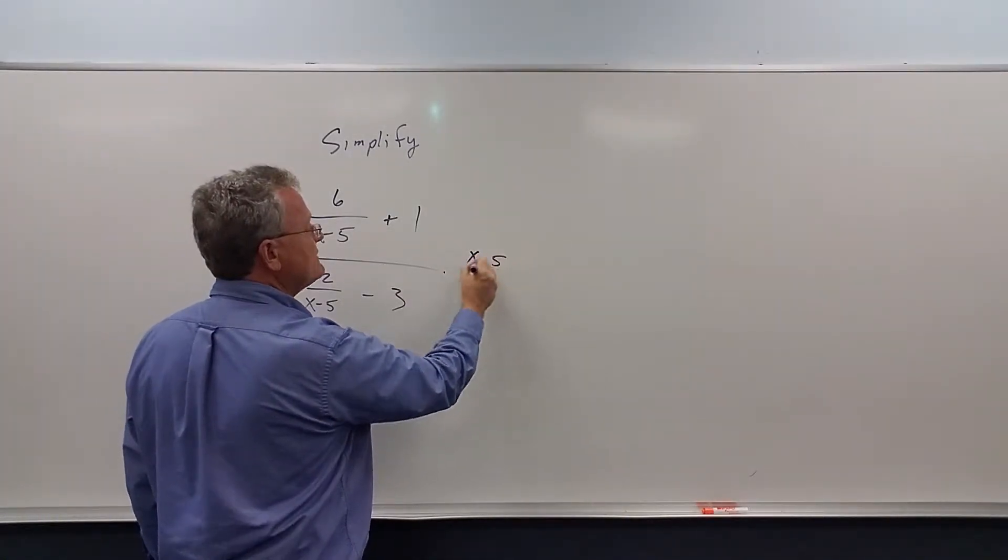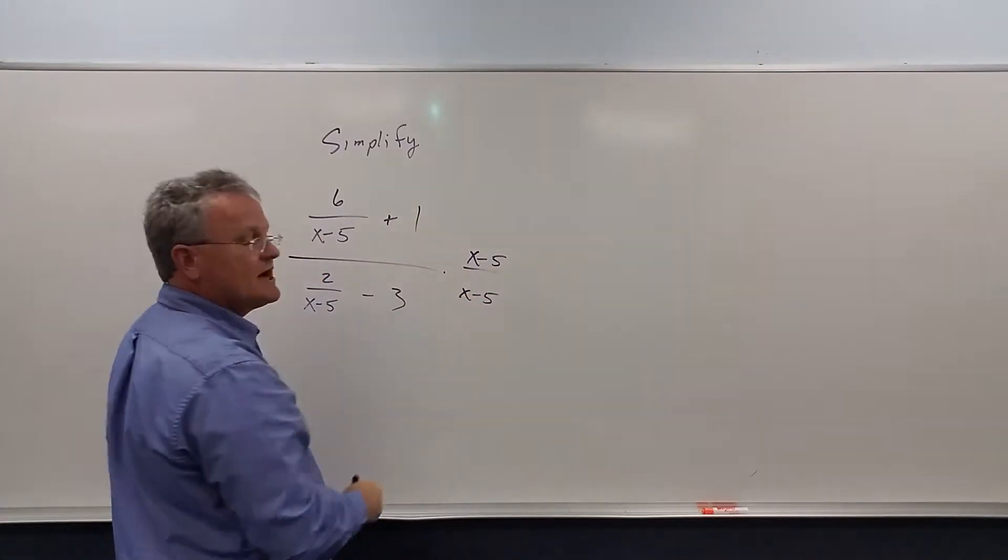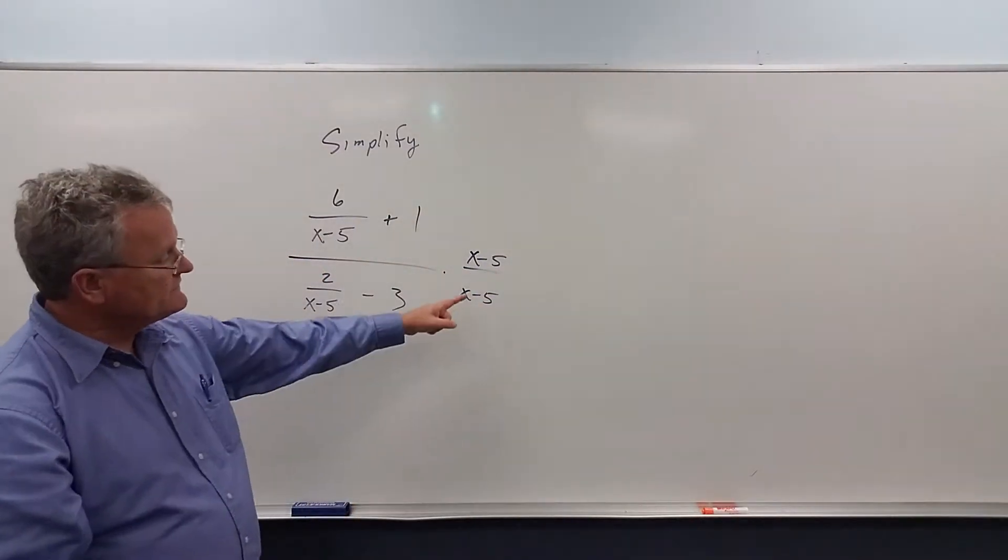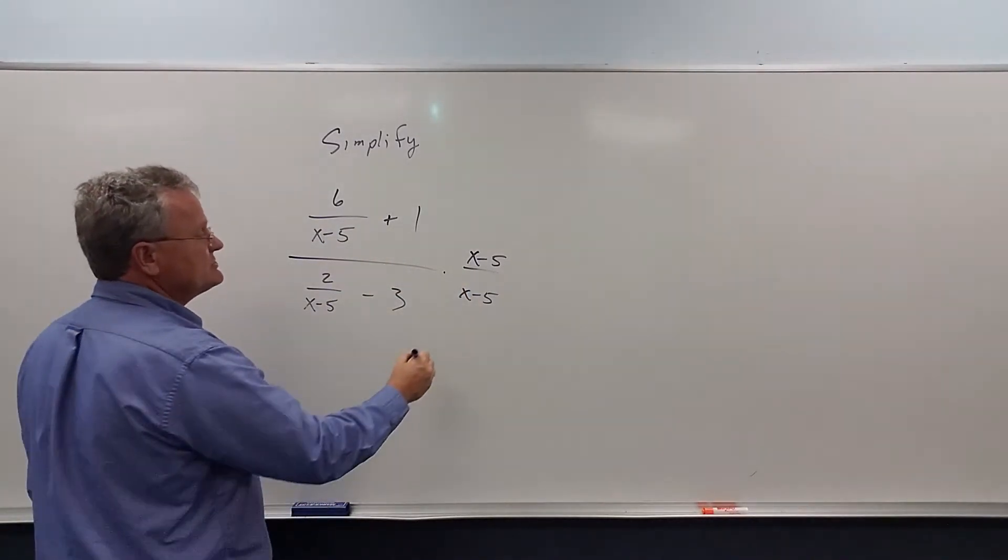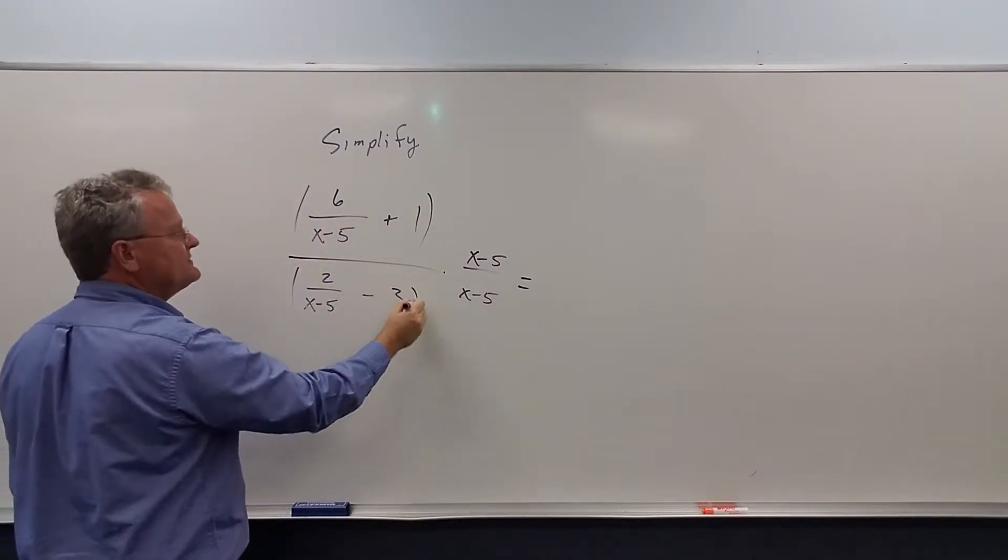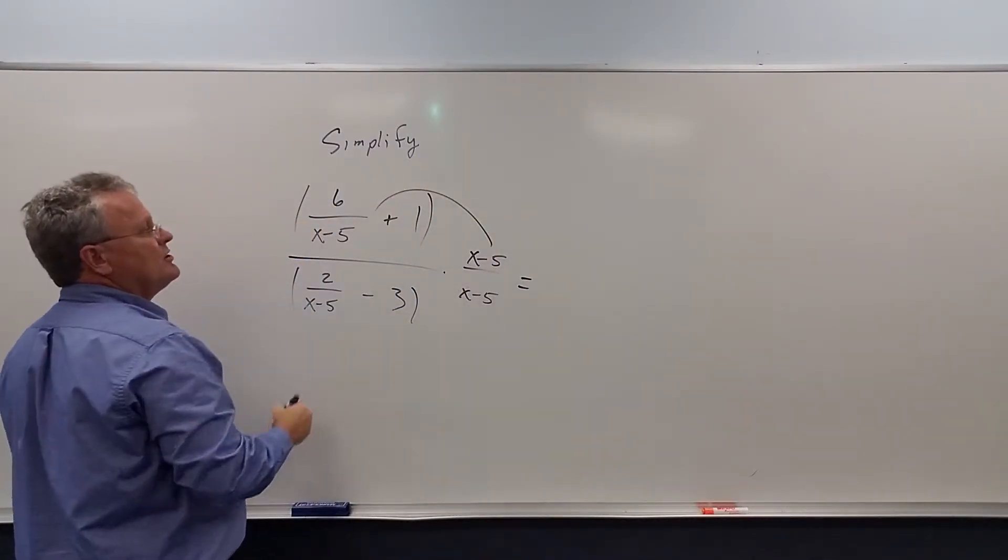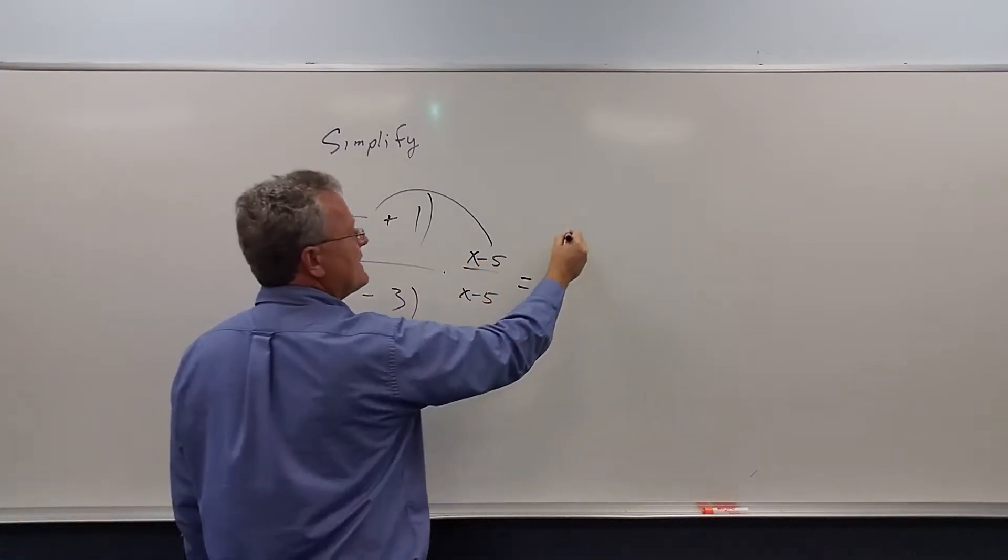So our next step is to multiply the top and bottom by our least common denominator. Again, this is equivalent to multiplying by one—it doesn't change it. So now we distribute. Think of this as parentheses distribute. We get 6 over x minus 5 times x minus 5.